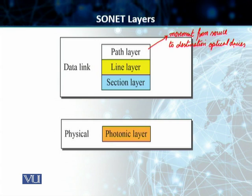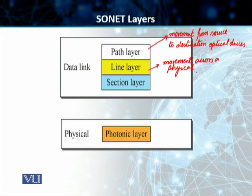The second layer on the data link level is called the line layer. The line layer is responsible for the movement of the signal across a physical line — a particular type of connection we have already discussed. Line layer overhead is added at this layer, and your STS multiplexers and add-drop multiplexers, or ADMs, provide the line layer functions.